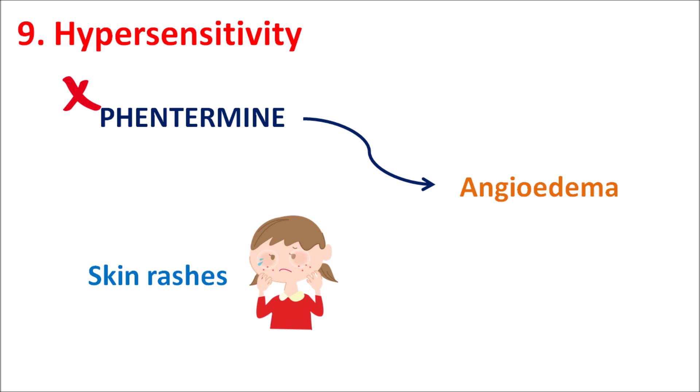In summary, phentermine is strictly contraindicated in the following conditions: concurrent use with MAO inhibitors due to risk of hypertensive crisis, requiring a 14-day gap; pregnancy and nursing women; glaucoma and hyperthyroidism; patients with cardiovascular disorders; uncontrolled hypertension; and in cases of hypersensitivity reactions. In other obese patients, phentermine can be used short-term to reduce body weight, but important side effects include increased blood pressure, anxiety, and insomnia.